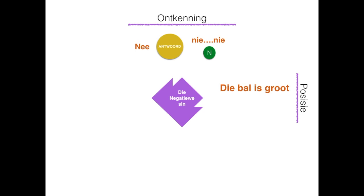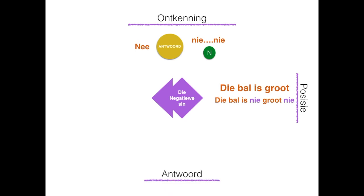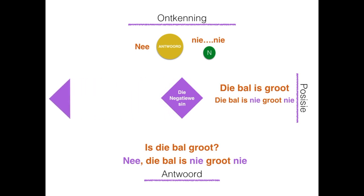We can look at the position of where 'nie' goes. The example is 'die bal is groot'. Always remember to put your first 'nie' after the first verb: 'die bal is nie groot nie'. Very similar to English — 'the ball is not big' — we just add an extra 'not'. We can also look at how we answer a question in the negative: 'nee, die bal is nie groot nie'. You add your 'nee' in front when someone asks you a question.